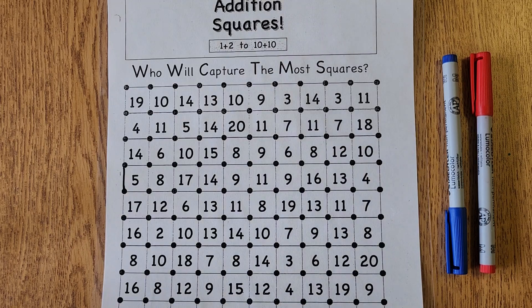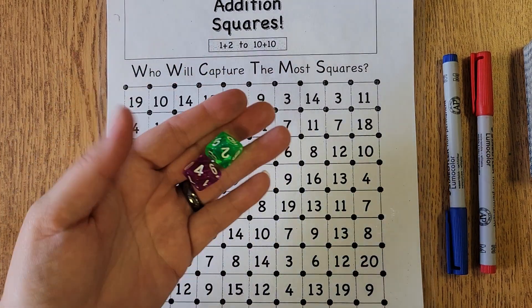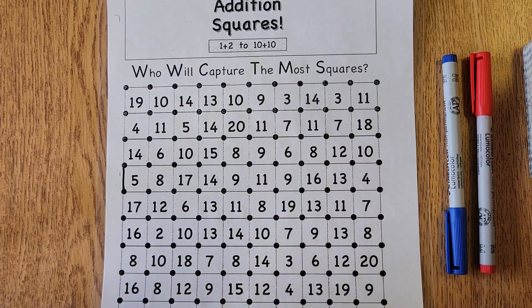This game practices our fact fluency with numbers up to 20. In this game you and a partner will take turns rolling the dice or flipping over two cards.